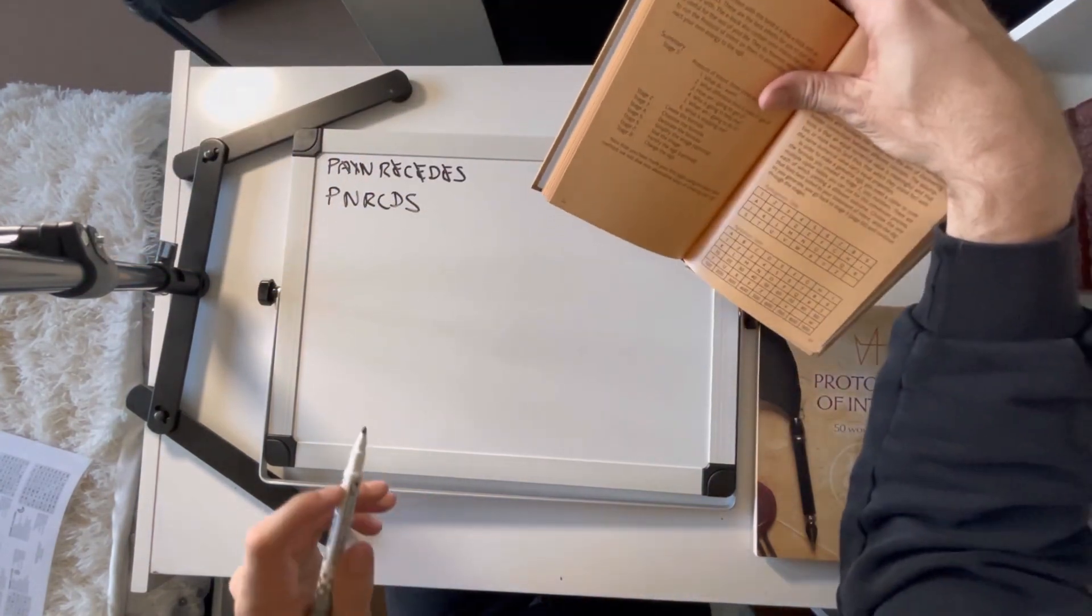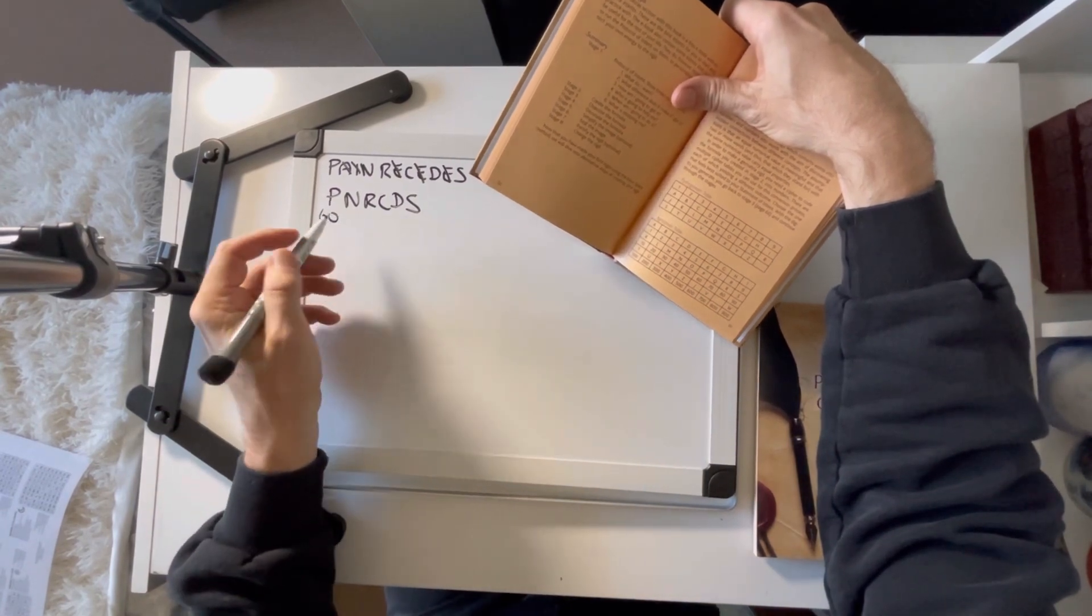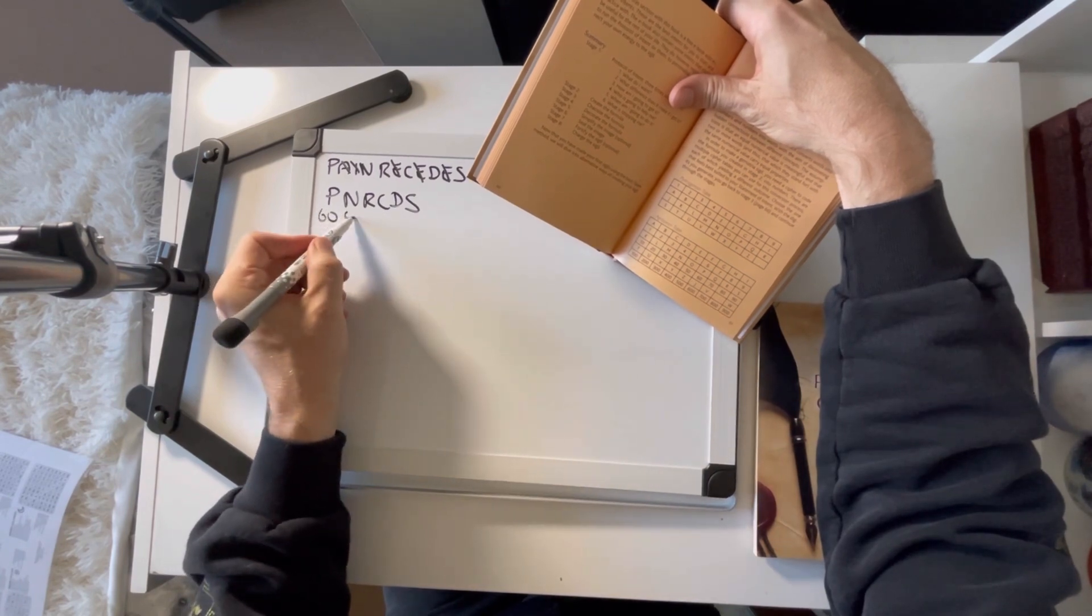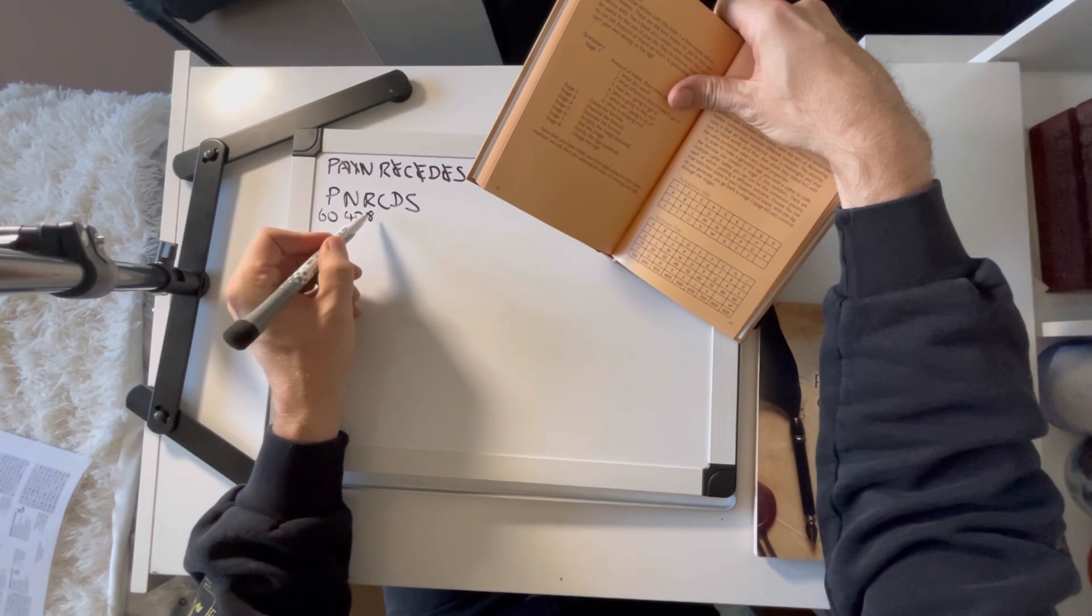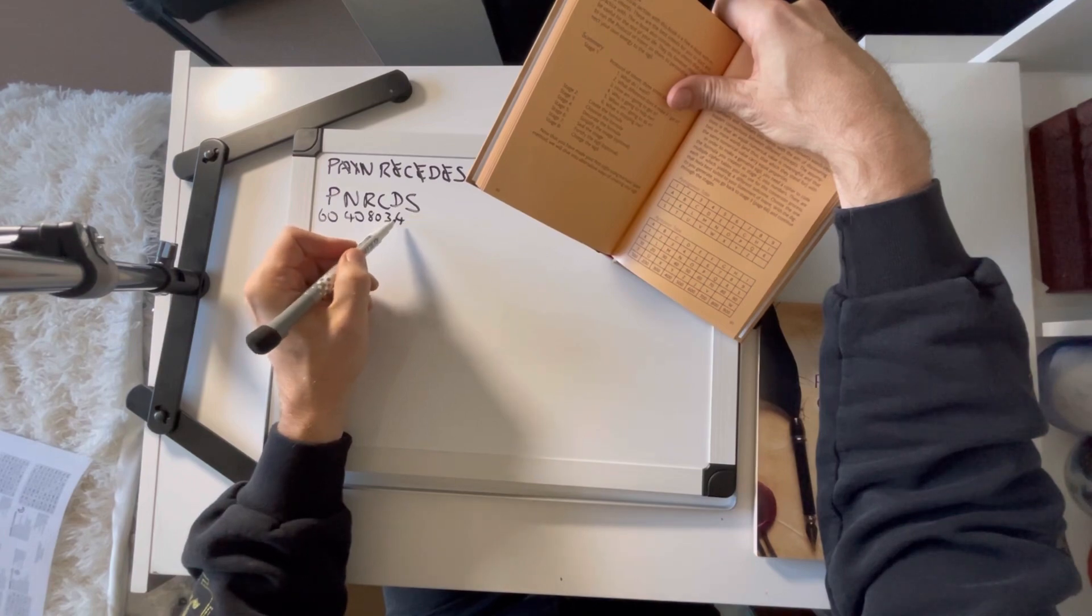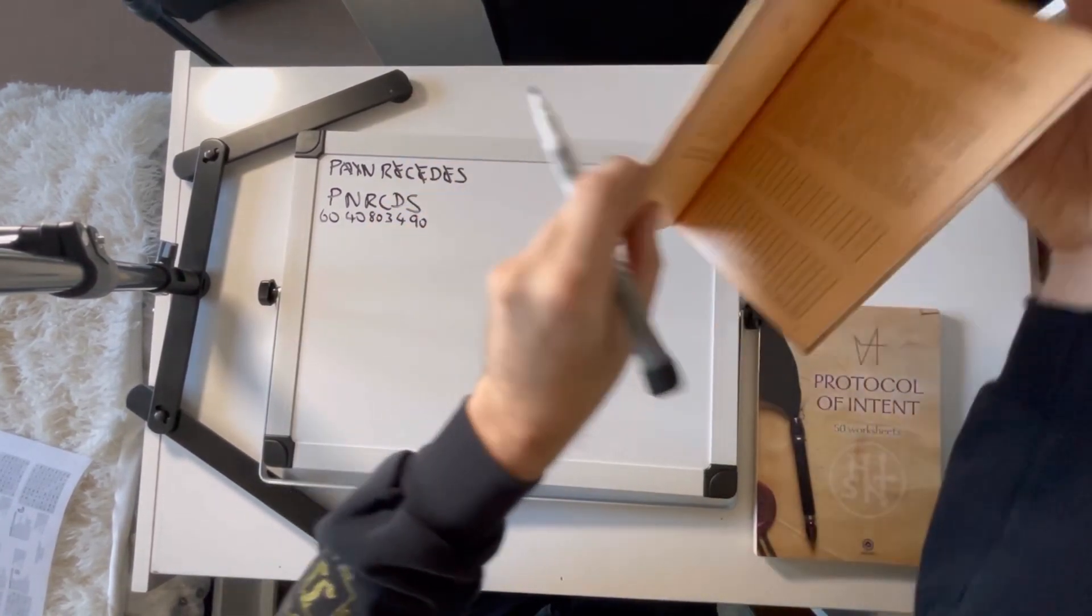The letter P has the number 60 attached to it. The letter N is 40, R is 80, C is 3, D is 4, and S is 90. So we've got some pretty large numbers there.